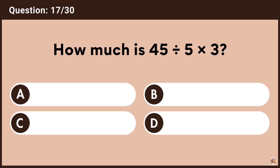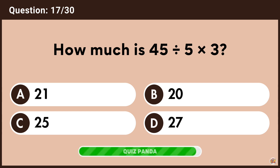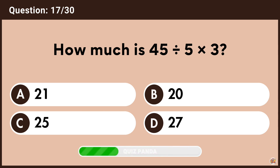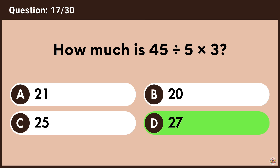How much is 45 divided by 5 multiplied by 3? Answer D, 27.